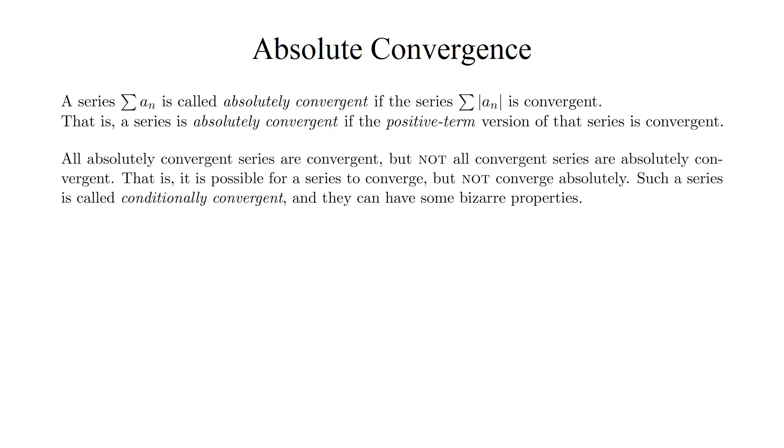So to summarize, we now have three ways in which to classify the convergence status of a series: absolute convergence, conditional convergence, and divergence.